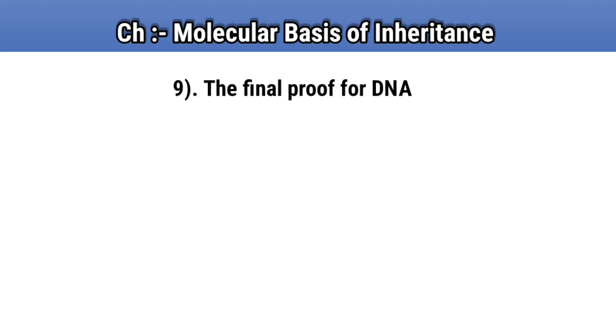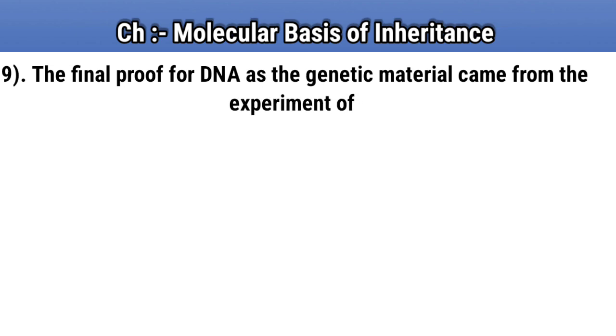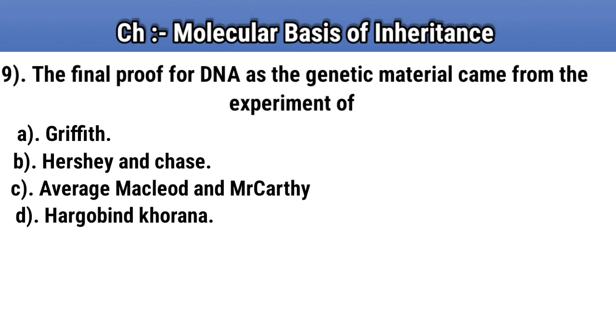Question number 9. The final proof for DNA is the genetic material came from the experiment of. Option A: Griffith. Option B: Hershey and Chase. Option C: Avery, MacLeod and McCarty. Option D: Har Gobind Khorana. Answer B: Hershey and Chase.